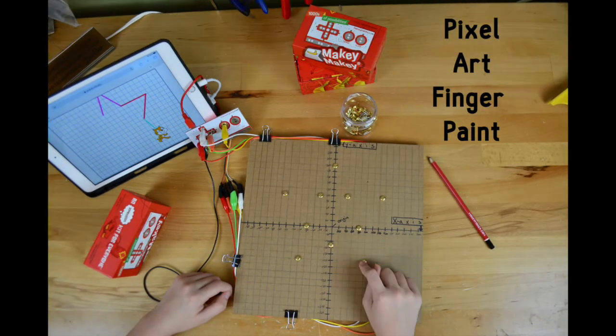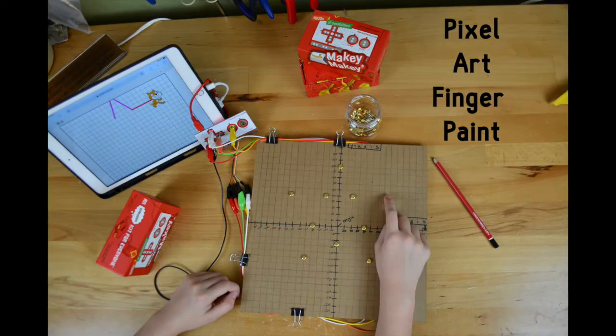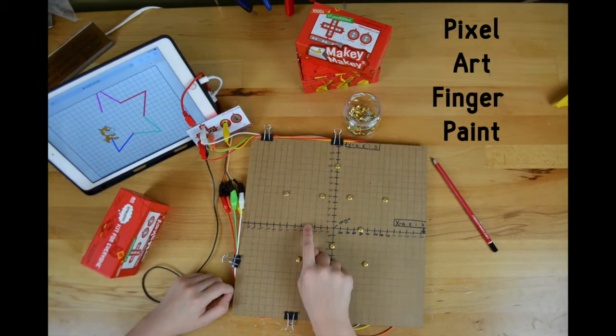We're going to craft this physical coordinate plane for our pixel art finger paint. All you need is cardboard, brass fasteners, and your Makey Makey kit. Let's go!